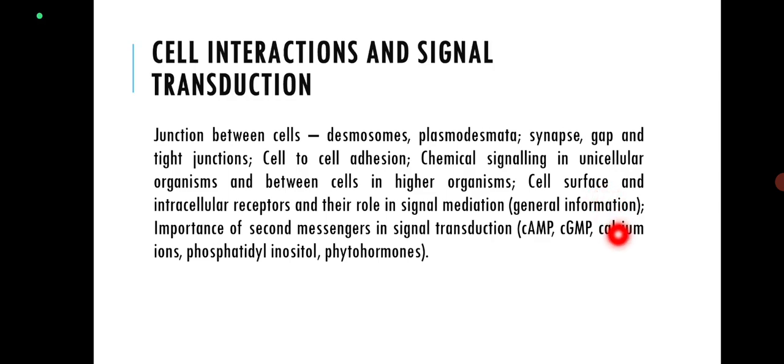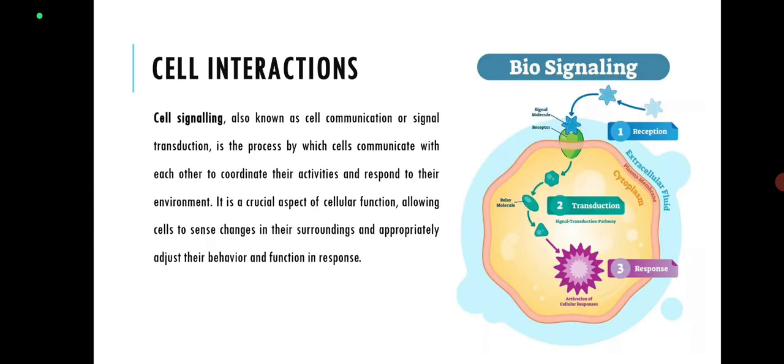We will also discuss cyclic AMP, cyclic GMP, calcium ions, phosphatidylinositol, and phytohormones. So let's discuss what is meant by cell interactions. Cell signaling, also known as cell communication or signal transduction, is a process by which cells communicate with each other to coordinate their activities and respond to their environment.